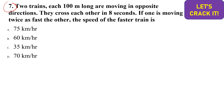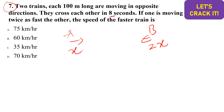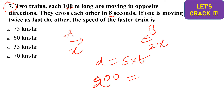The seventh question is related to trains. Two trains, each 100 meters long, are moving in opposite directions and cross each other in 8 seconds. One train is moving twice as fast as the other. Let train A move at speed x, so train B moves at 2x. Total distance to cross = 100 + 100 = 200 meters.